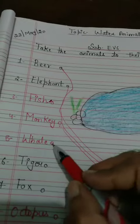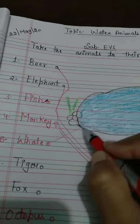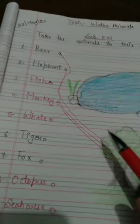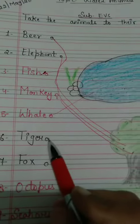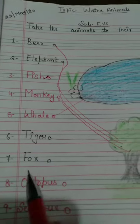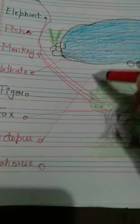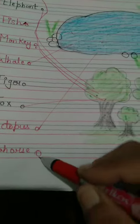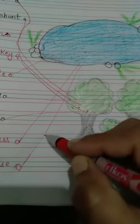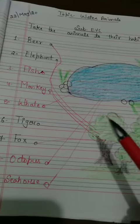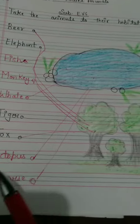Snail — match snail with the pond because they live in water. Next is tiger — tiger lives in the forest. Fox lives in the forest. Octopus lives in water. Seahorse also lives in water.